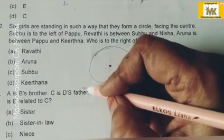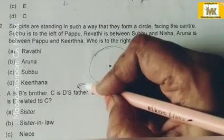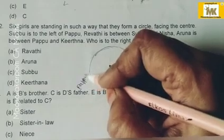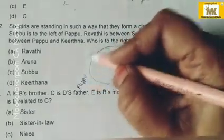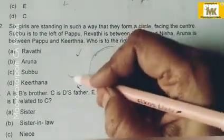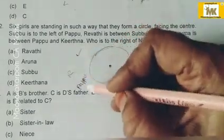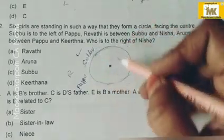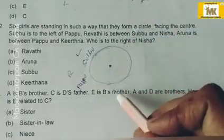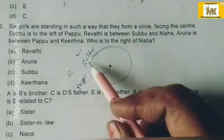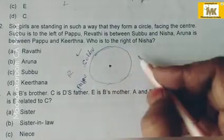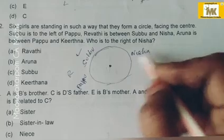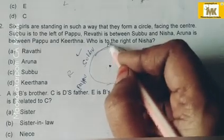This is the left of Papu. This is Papu. The left means here is Subbu. Revathi is between Subbu and Nisha. Nisha is here. Revathi is here.